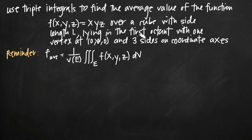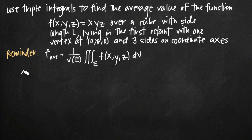The cube is lying in the first octant of our three dimensional coordinate system and it has one vertex at the origin, the point (0, 0, 0), and three of its sides lie along the coordinate axes. Before we get started let's just draw briefly a picture of what we're talking about here.